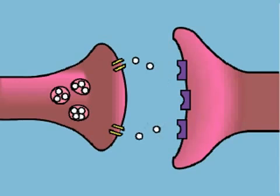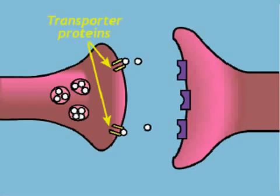Some of the neurotransmitter is degraded by enzymes in the synaptic space, and some of the neurotransmitter is carried back into the presynaptic neuron through transporter proteins.